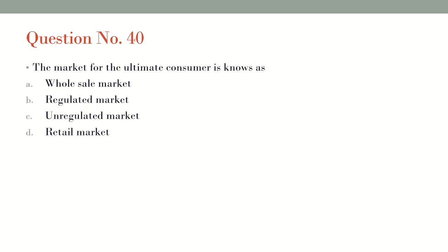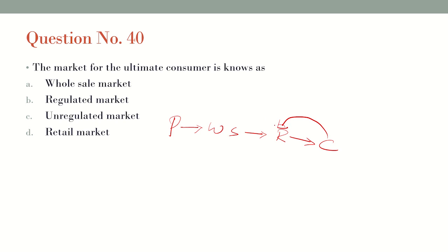Question number 40: The market for the ultimate consumer is known as what? Here we are talking about the distribution channel: the producer supplies to the wholesaler, the wholesaler supplies to the retailer, and the retailer gives it to the consumer. So the ultimate market for the consumer to purchase products is the retail market. The answer is option D: retail market.